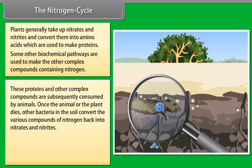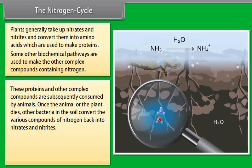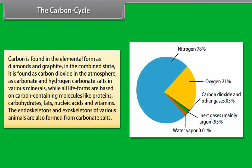These proteins and other complex compounds are subsequently consumed by animals. Once the animal or the plant dies, other bacteria in the soil convert the various compounds of Nitrogen back into Nitrates and Nitrites. A different type of bacteria converts the Nitrates and Nitrites into Elemental Nitrogen. Thus there is a Nitrogen cycle in nature in which Nitrogen passes from its Elemental form in the atmosphere into simple molecules in the soil and water which get converted to more complex molecules in living beings and back again to the simple Nitrogen molecule in the atmosphere.